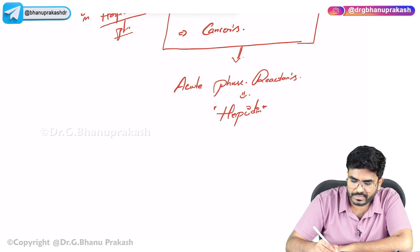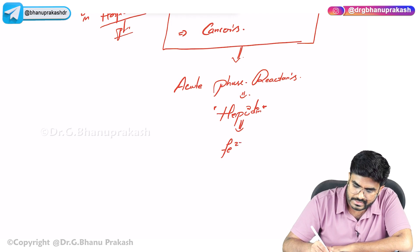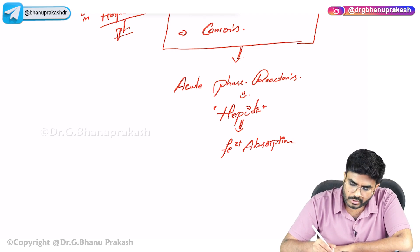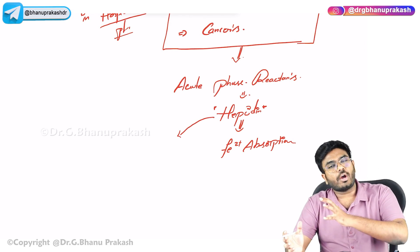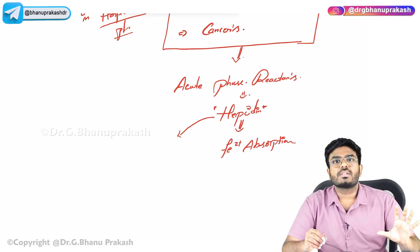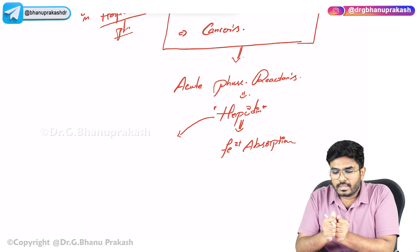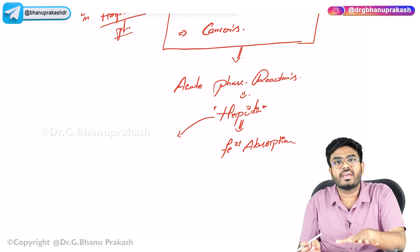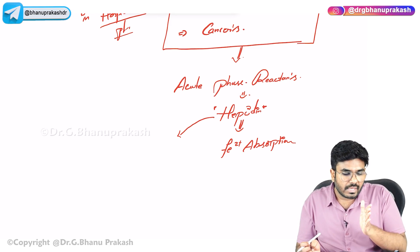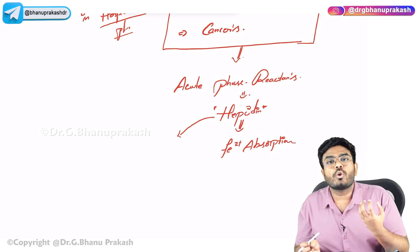Hepcidin is produced by the liver. Hepcidin decreases iron absorption. Not only that, this hepcidin molecule sequesters all the iron present in the blood — packing it inside the liver and inside bone marrow macrophages. All the iron is stored within the cells, so blood levels of iron decrease.